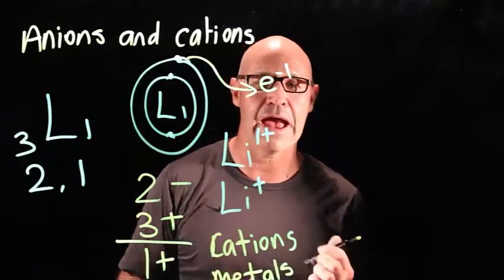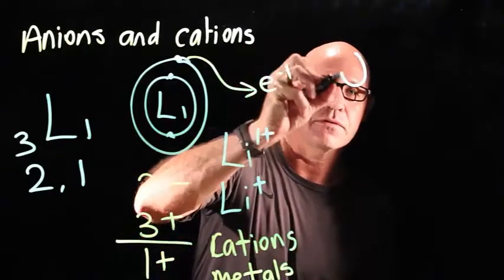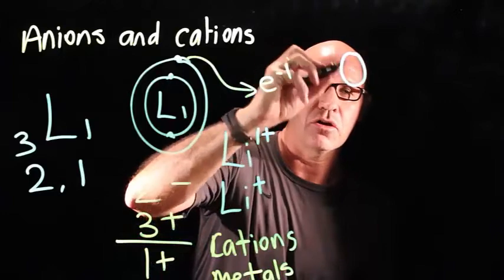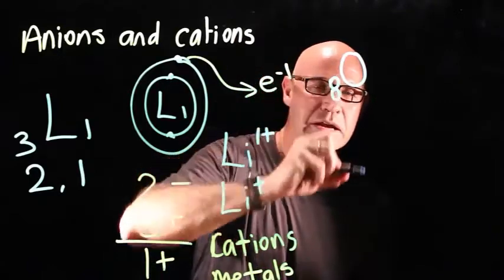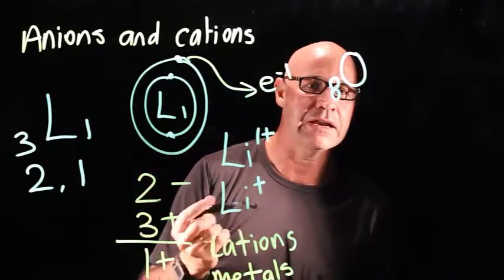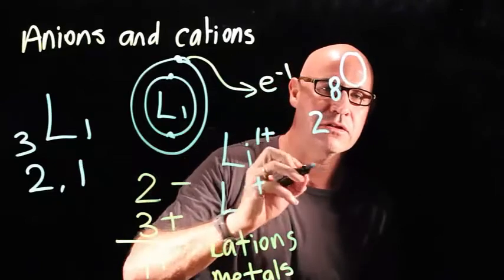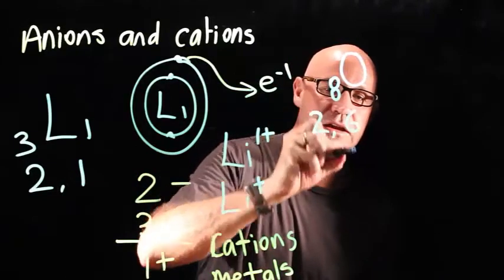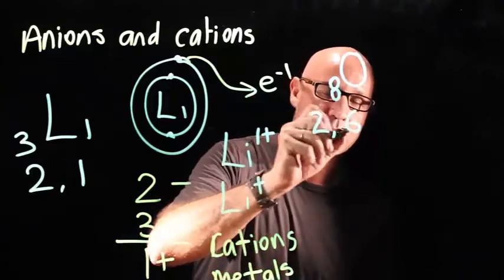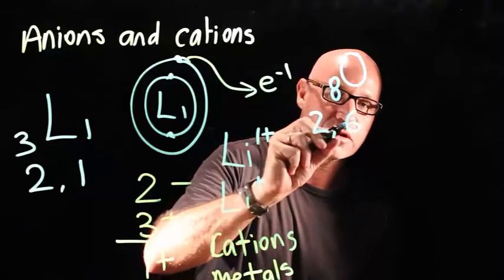The other ones are anions. Here's an example of an anion. So oxygen has got an atomic number of eight, so it's got eight electrons. Two in the inner shell, six electrons in the next shell. They can fit eight electrons in the second shell.